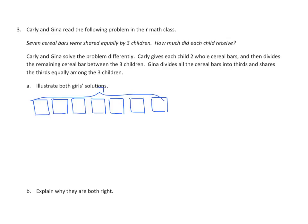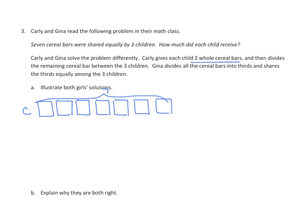Now let's read what Carly did. She gives each child two whole cereal bars, then divides the remaining cereal bar between the three children. So what did she do? Well, each kid got two of these cereal bars. So we can represent that. Each kid gets two. So we're going to just draw that down here. And then again, each child is going to get two. And again, each kid gets two. So this represents each one of these kids here.